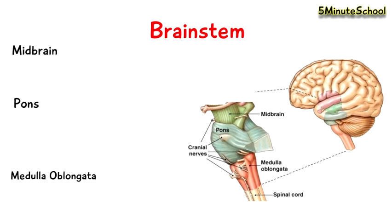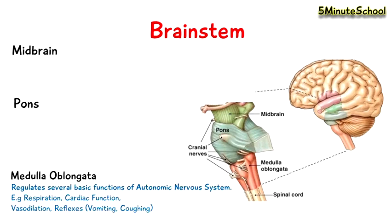The medulla oblongata is responsible for regulating several basic functions of the autonomic nervous system, and that includes respiration, cardiac function, vasodilation, and certain reflexes like vomiting and coughing.